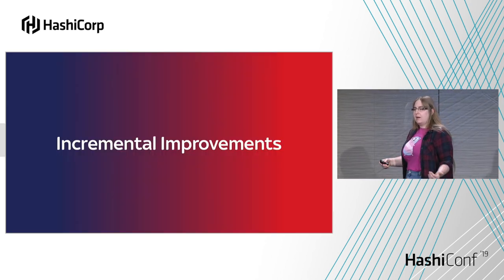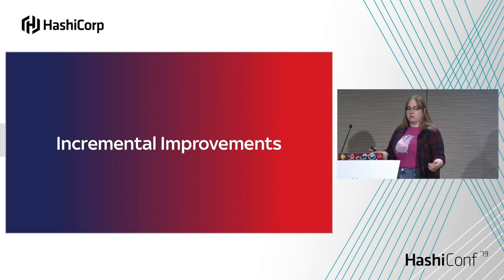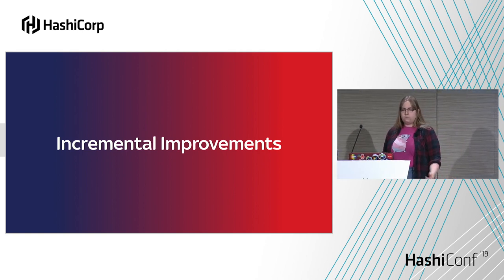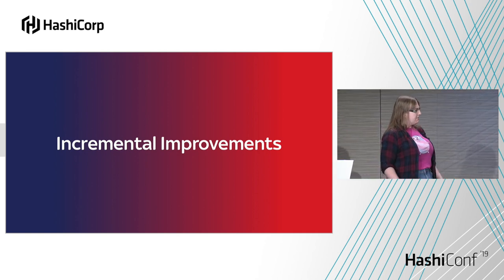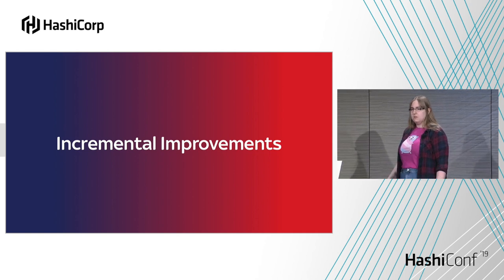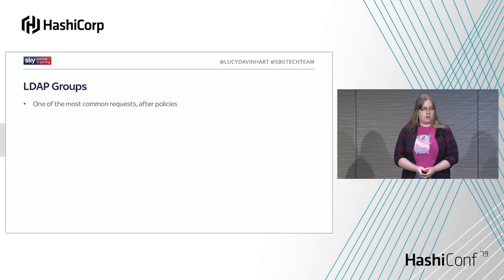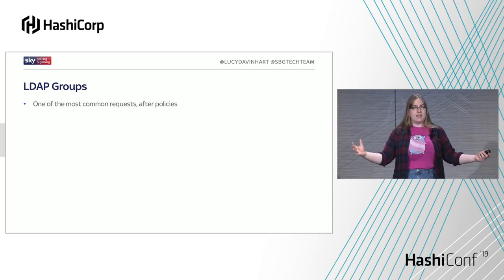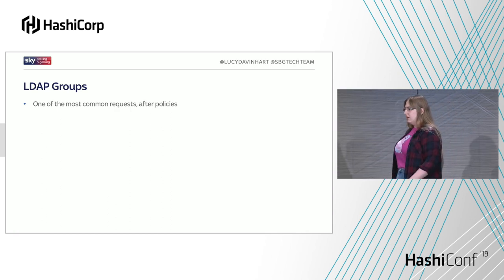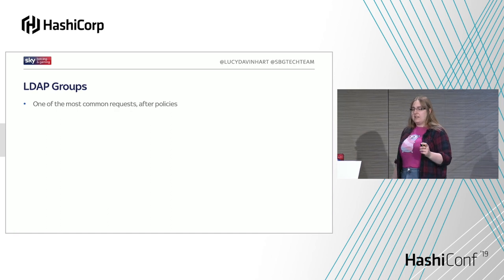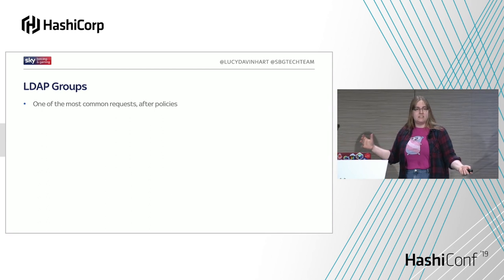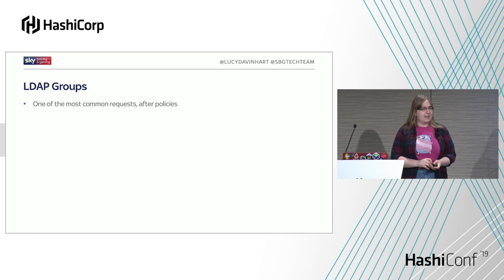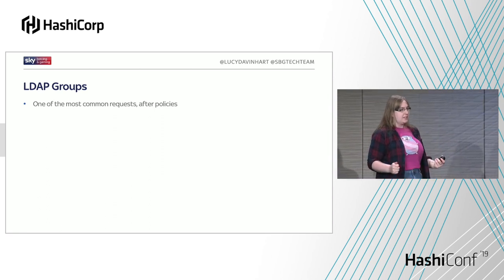That was our minimal viable product — solving part of the problem. So we started adding more to it, adding additional resources. Starting with LDAP groups: what policies do individual groups of humans have access to within Vault? We added this to the pipeline back in July 2018 — there were about 90 of these at the time, and there are about 250 now. Back then, there wasn't actually a dedicated resource for managing these in the Terraform provider.